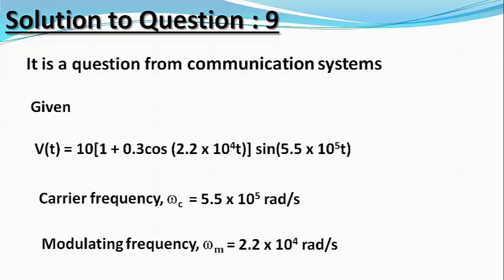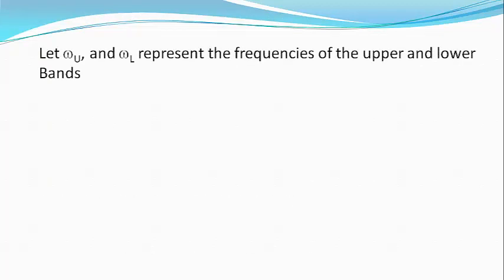Let ωu and ωl represent the upper and lower sidebands respectively. Then ωu = 5.5 × 10⁵ + 2.2 × 10⁴, or